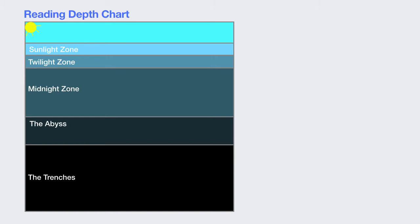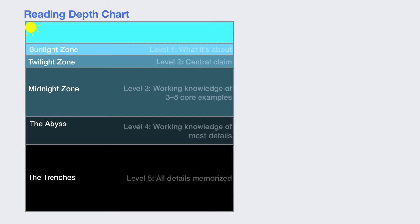While the trenches look like the largest zone, technically there are only a few spots on the planet where these really deep trenches exist — like the Mariana Trench, the deepest spot on the planet. If we think about the levels of reading discussed last session, they correspond to these zones.